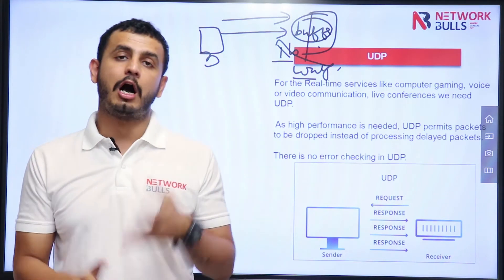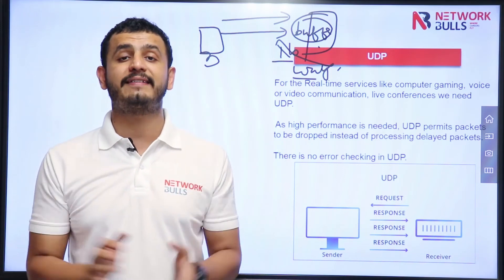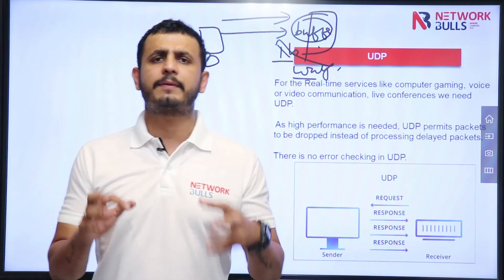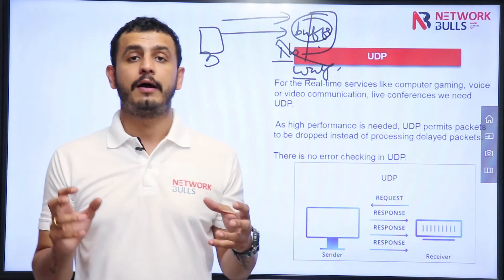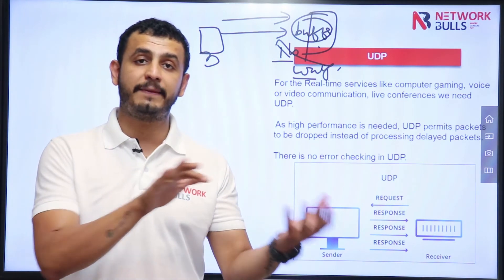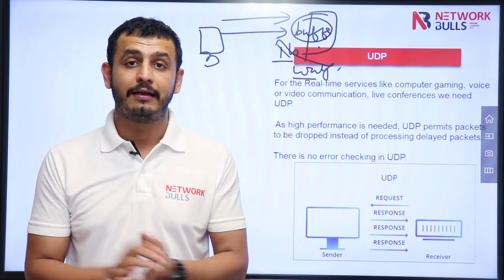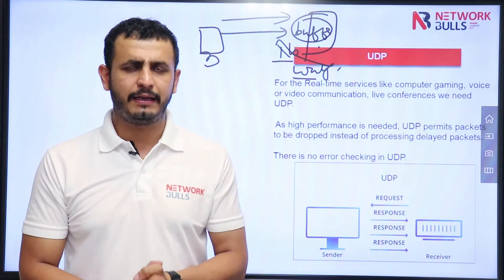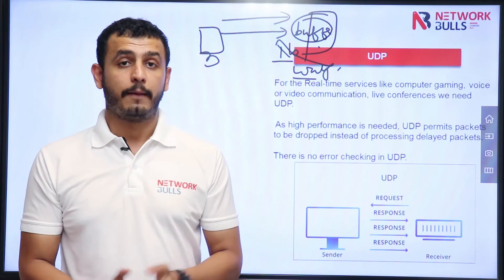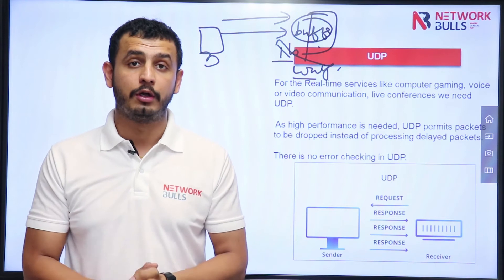How does UDP work without flow control? In UDP we always send a smaller amount of data — we do not send large amounts of data. In upcoming videos we will discuss MSS, Maximum Segment Size, covering how big a TCP segment and a UDP datagram will be. You will then understand that UDP can tolerate the lack of flow control.